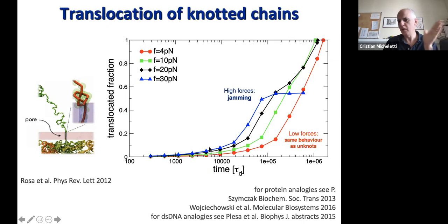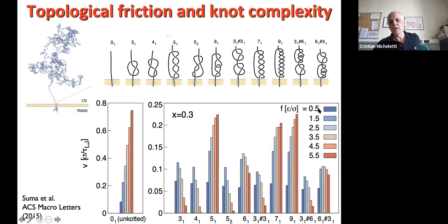Everything is nicely summarized by this slide, which tells you that even if you have a knotted chain, if you pull with a low force it goes through almost like an unknotted chain. You pull with slightly higher force, it goes through faster. But if you apply higher and higher forces, you slow it down until you jam it completely. So the more you want, the less you get.